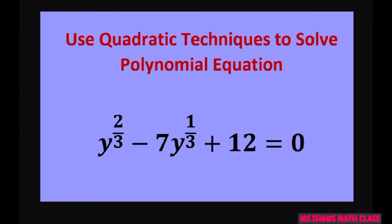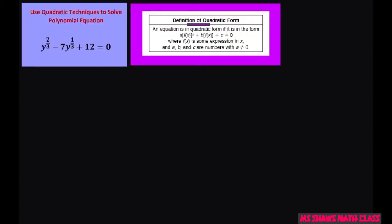So we'll go ahead and get started on that, and when you do this we're going to use the definition of quadratic form. That means I want something squared and then the next thing should be to the first power plus 12 equals 0. We're just using this form.